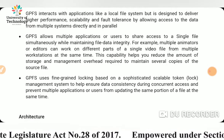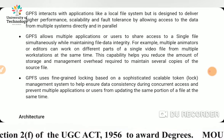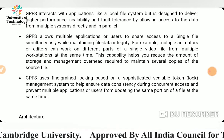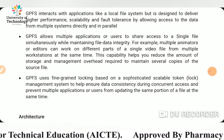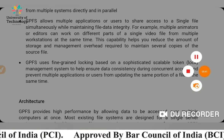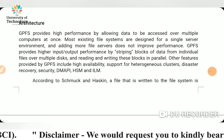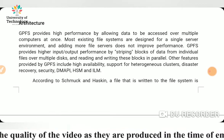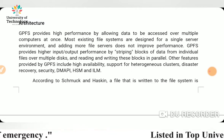GPFS uses fine-grained locking based on a sophisticated scalable token lock management system to help ensure data consistency during concurrent access, preventing multiple applications or users from updating the same portion of a file at the same time. Moving to architecture, GPFS provides high performance by allowing data to be accessed over multiple computers at once. Most existing file systems are designed for a single server environment, and adding more file servers does not improve performance.